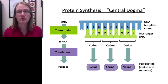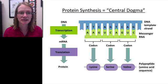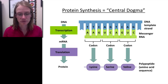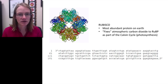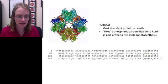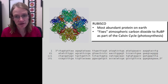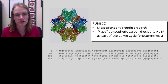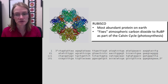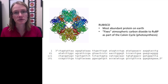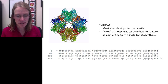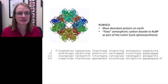For today we're going to go step by step through one particular piece of DNA that codes for a particular protein. That protein is Rubisco — the most abundant protein on Earth. It is responsible for fixing atmospheric carbon dioxide into RuBP, which is part of photosynthesis.